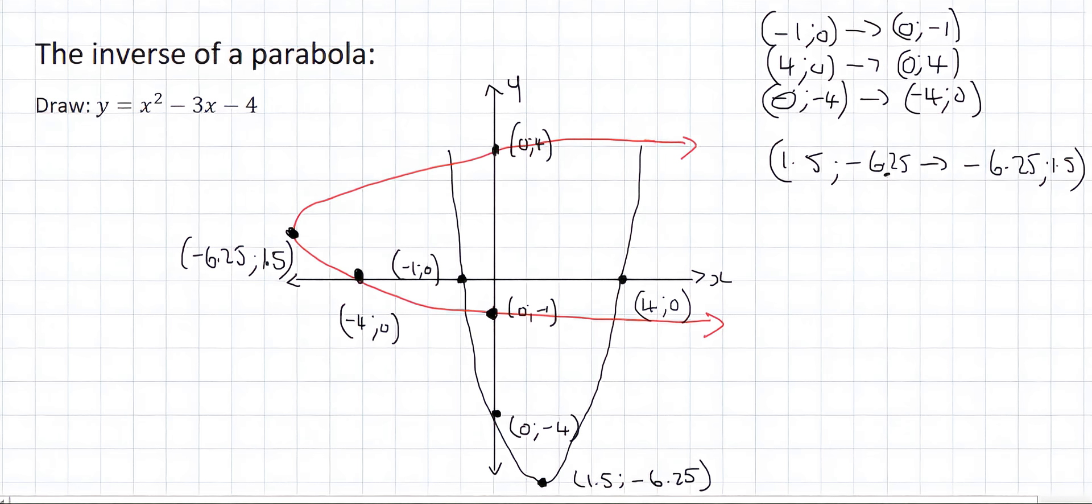So a parabola, when you take its inverse, it causes the graph to turn on its side like that. Okay, but all we actually did was we found some important points on the original parabola and then we switched those coordinates around and found the inverse.